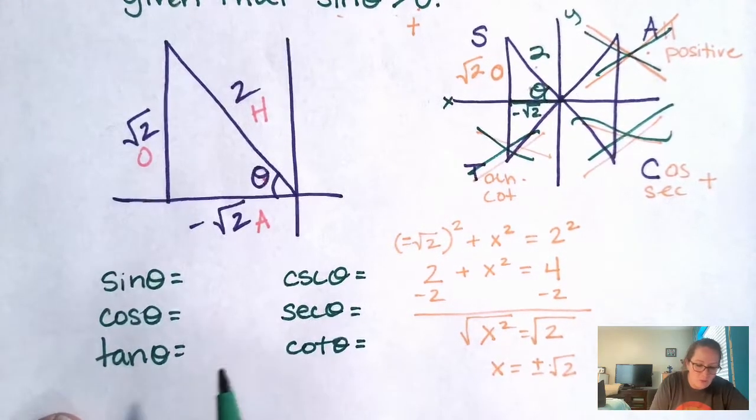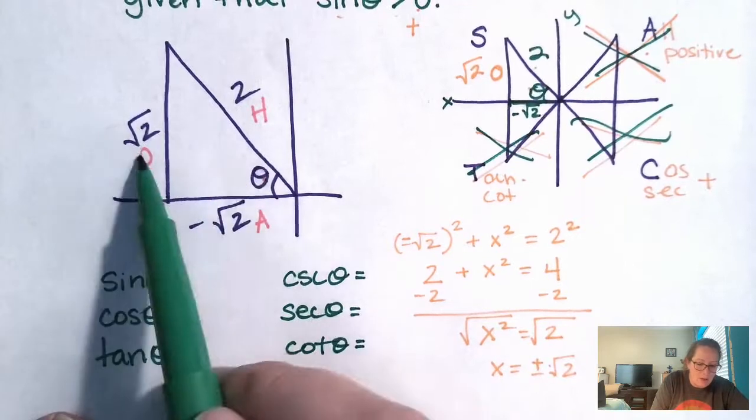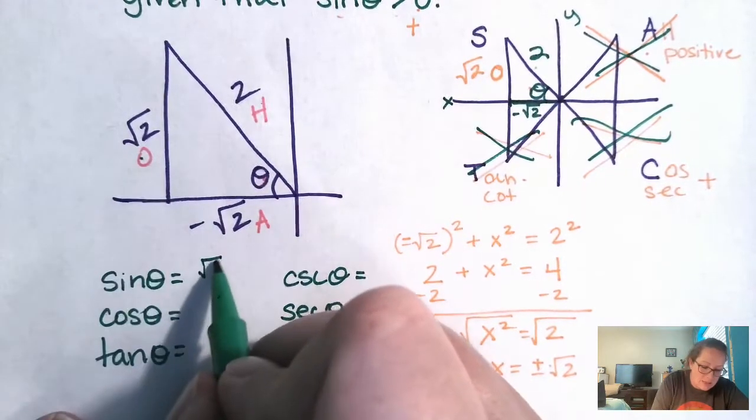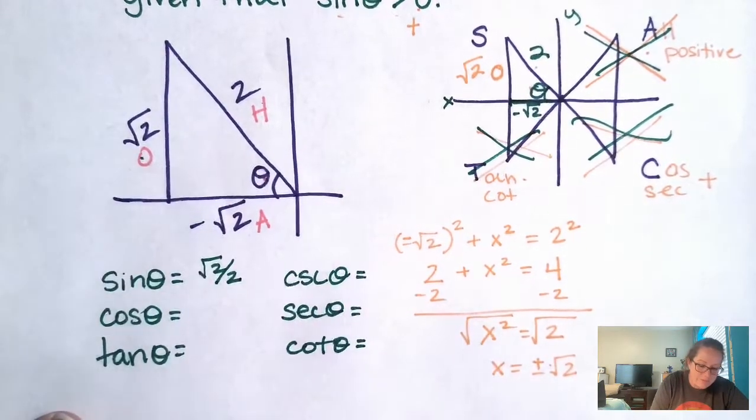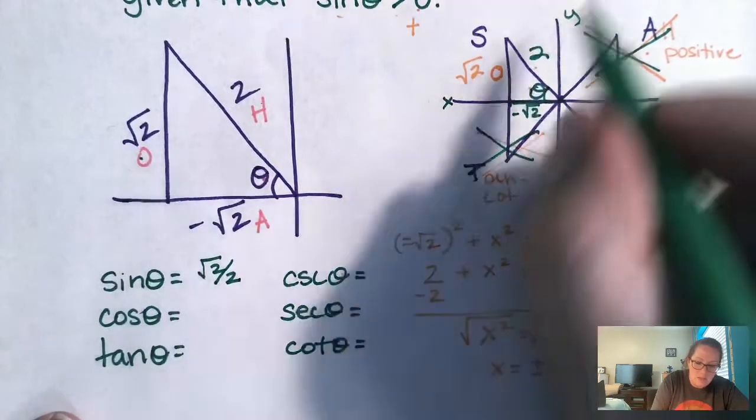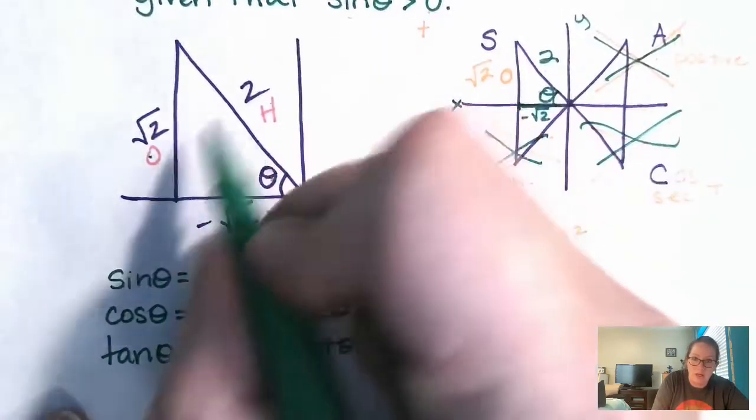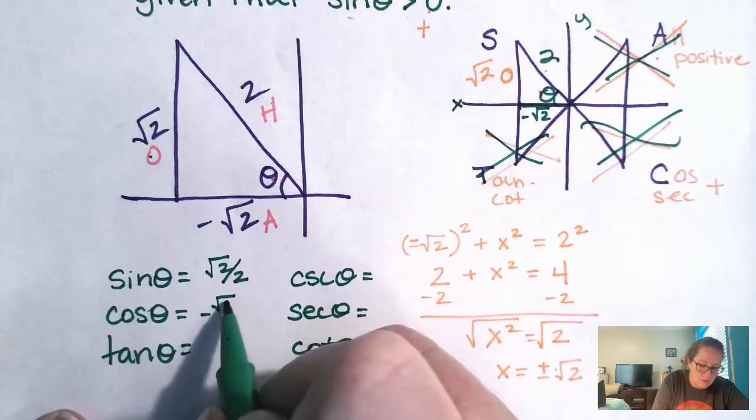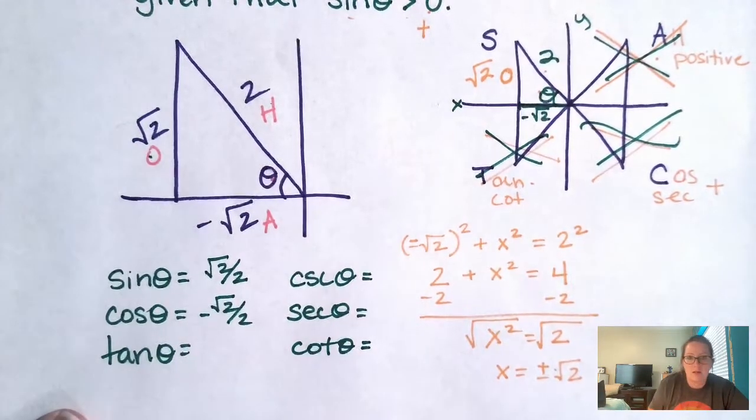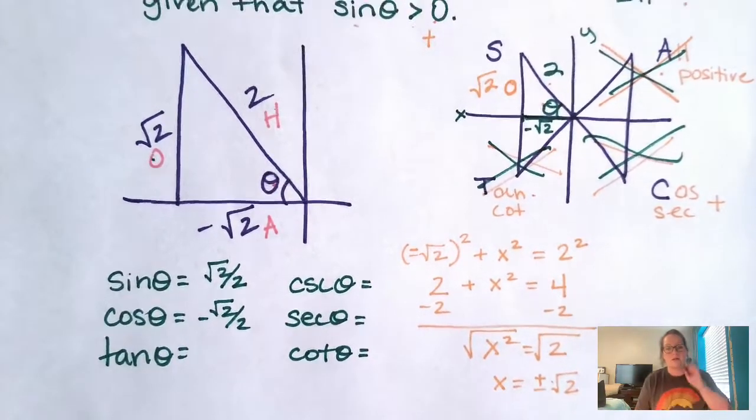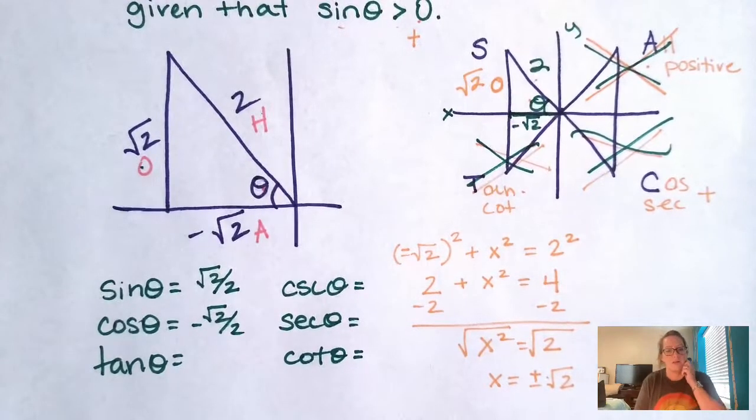Okay. So sine wasn't given to us, but we can find it. O, H. So we get a positive root two over two. Cosine was already given to us in the problem. So you can look at your triangle that we just did, or just take the easy way out and give it what the problem gave us already.